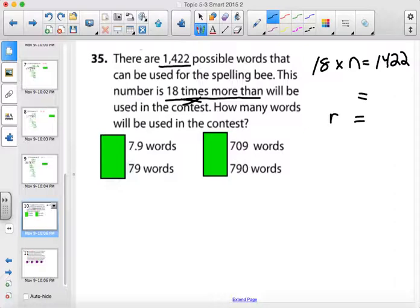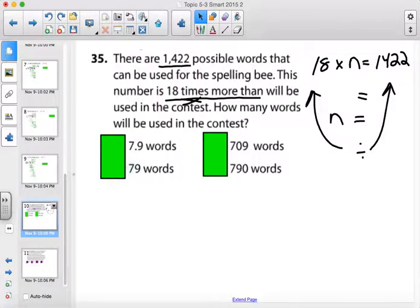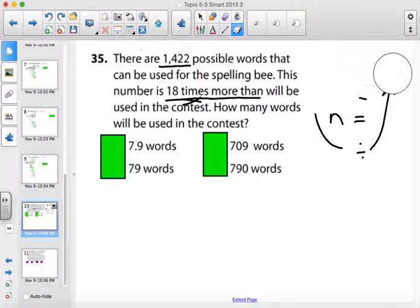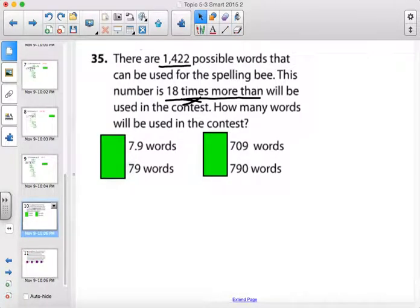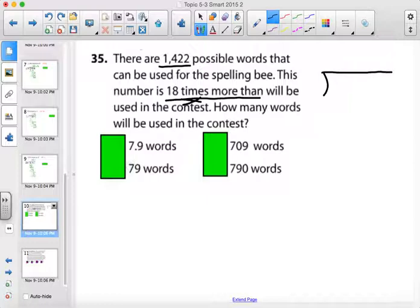Of course, we're going to find the answer to this. We want to get n by itself. So, what we need to do is we are going to divide on both sides to come up with the answer here. So, this is definitely a multiplication situation solved through division. So, the problem will then be 1,422 divided by 18.